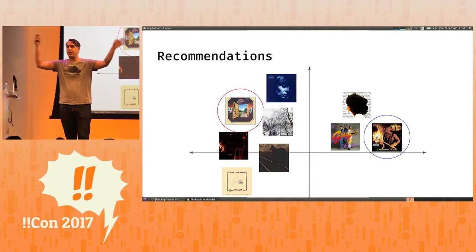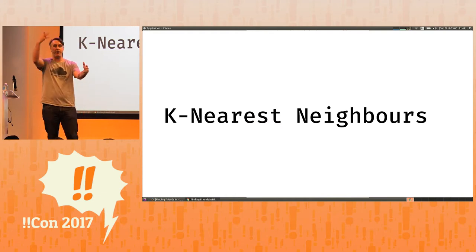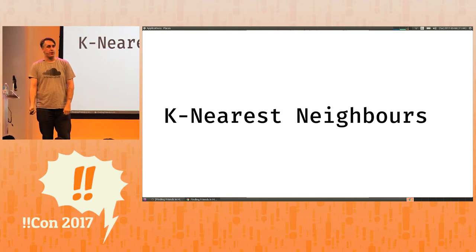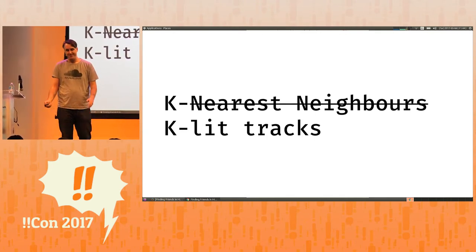And this takes a really long time. It's known in computer science as the K-nearest-neighbors problem because you have to compare for each track to the rest of the catalog and produce the top five tracks, or as I like to call K-lit tracks.